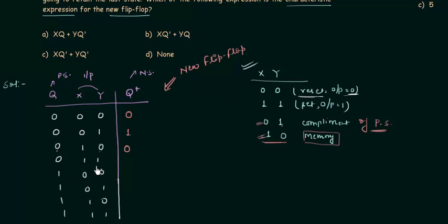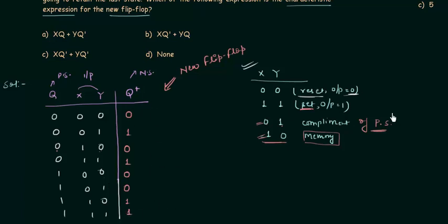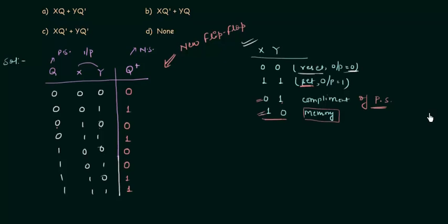For the next four rows with present state q=1: x=0,y=0 is reset so q+=0; x=0,y=1 is complement so q+=0 (complement of 1); x=1,y=0 is memory so q+=1; x=1,y=1 is set so q+=1. Now we use an 8-cell K-map to find the expression for q+.